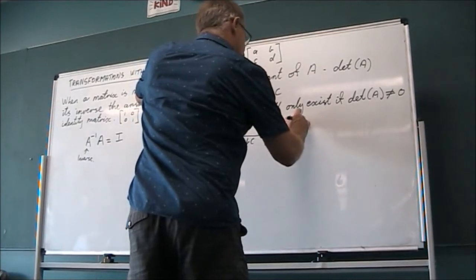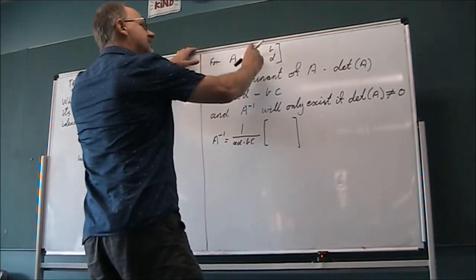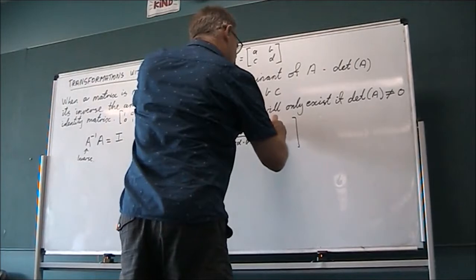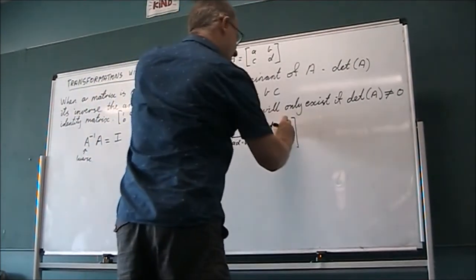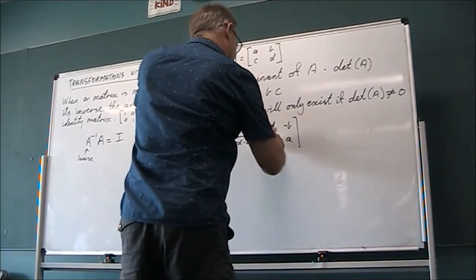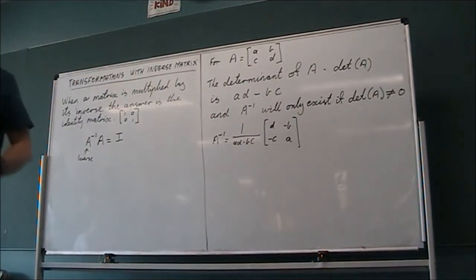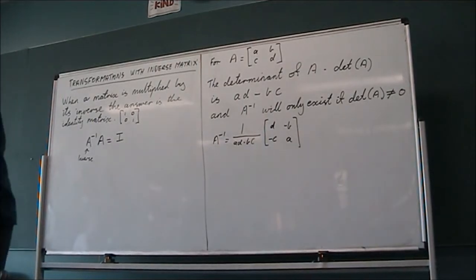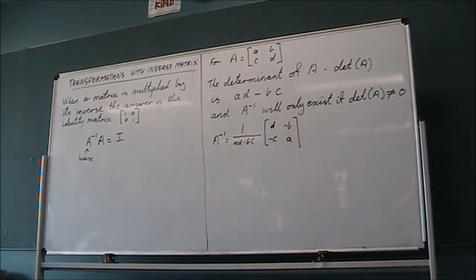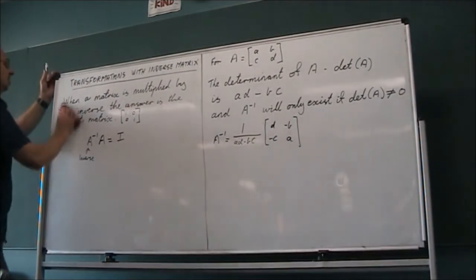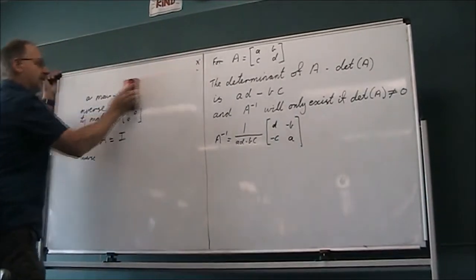Alright. So what else do we do to get our inverse? We swap these ones around, so D comes up here and A goes down there. And these two end up with a negative in front of them. And so that is our inverse matrix, which we did last year. This is just a reminder for you, hopefully. Alright, so let's do some stuff with our inverse matrix.